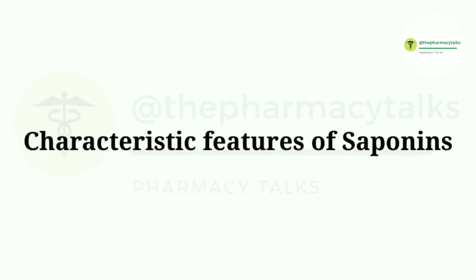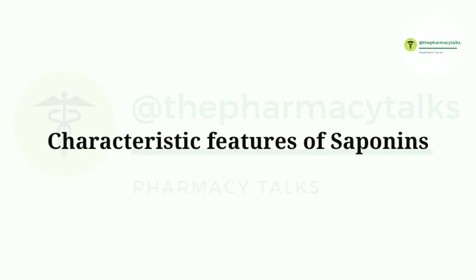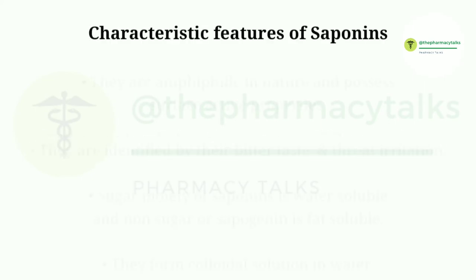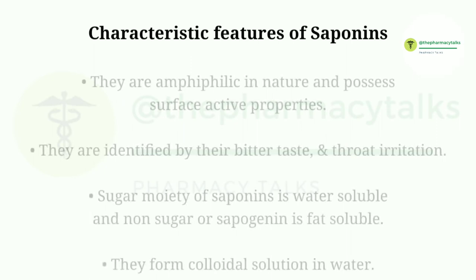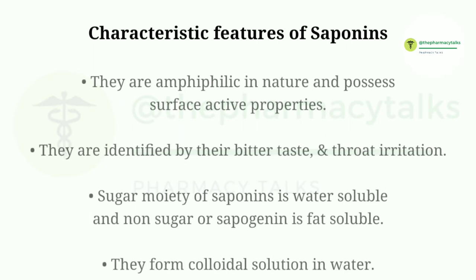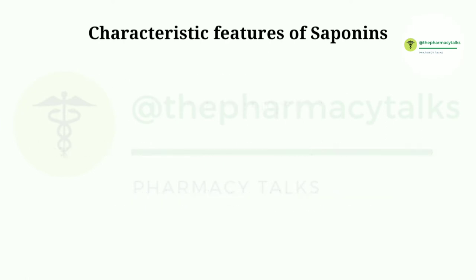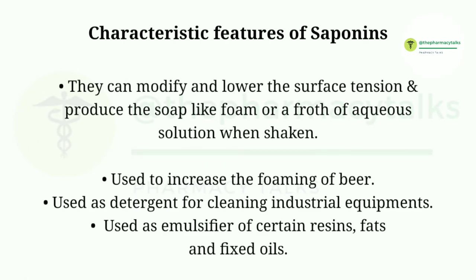Now we'll discuss the characteristic features of saponins. They are amphiphilic in nature and possess surface active properties. They are identified by their bitter taste and throat irritation. The sugar moiety of saponins is water soluble and the non-sugar or sapogenin is fat soluble. They form a colloidal solution in water and can modify and lower the surface tension, producing soap-like foam or froth of aqueous solution when shaken.